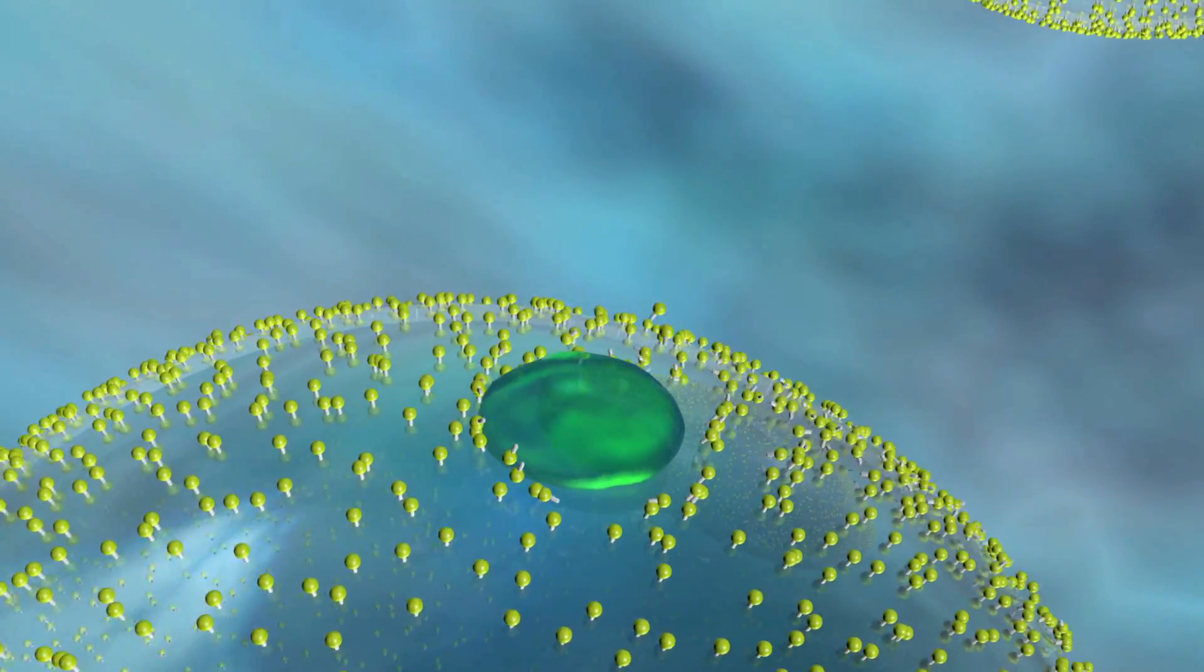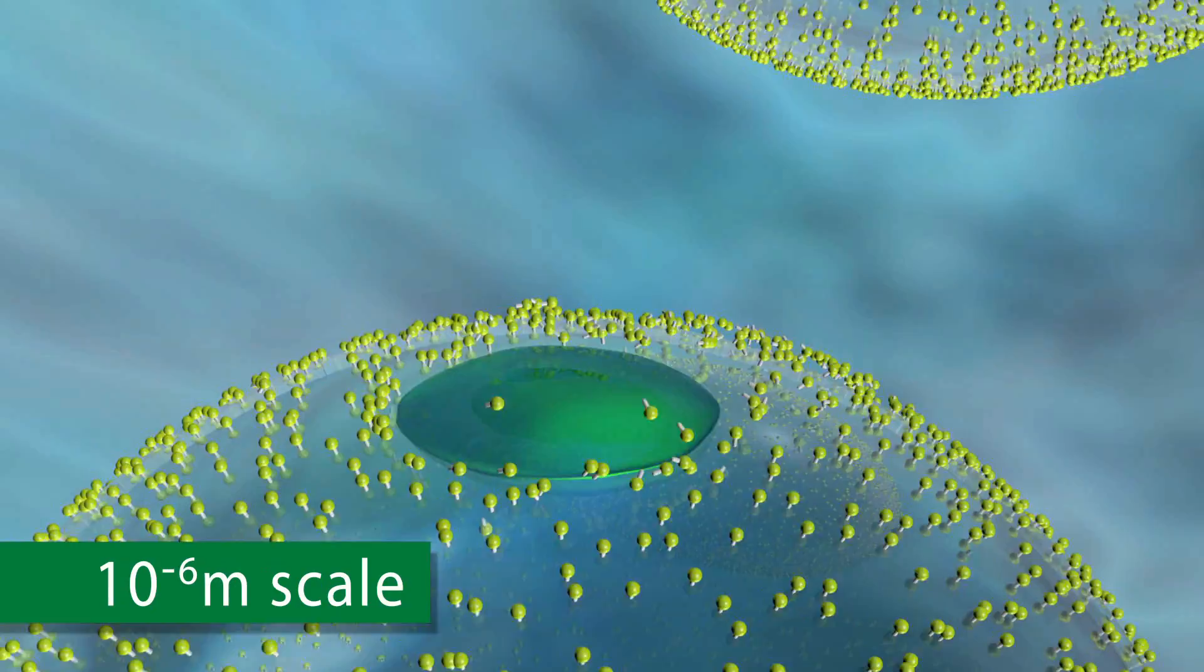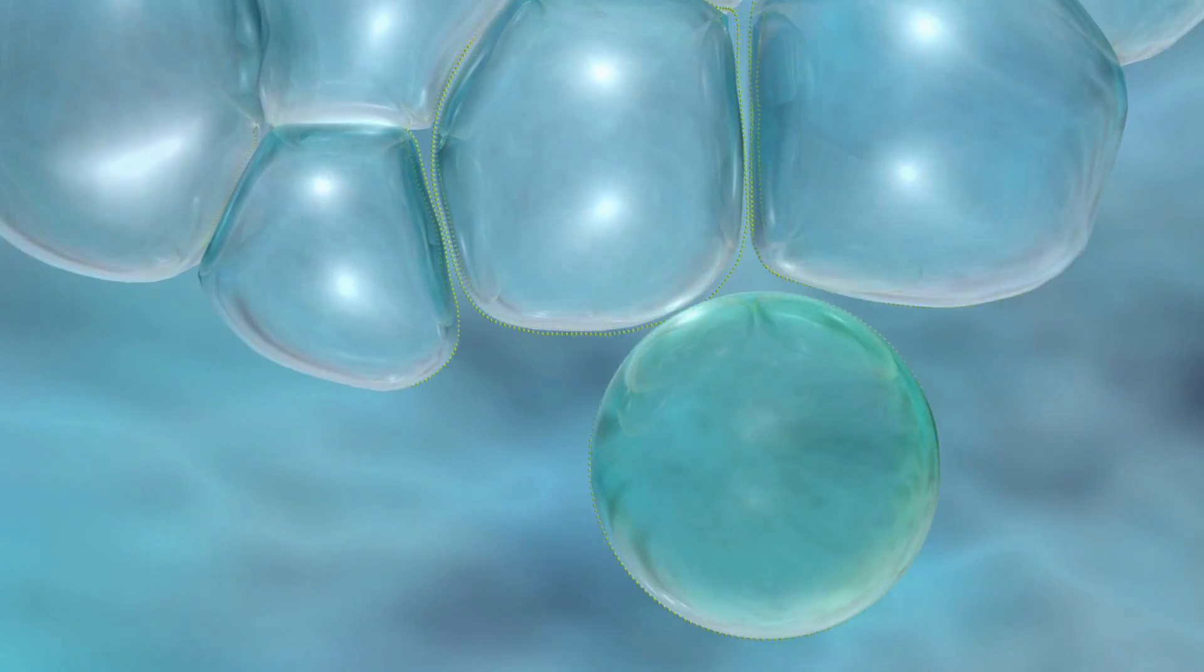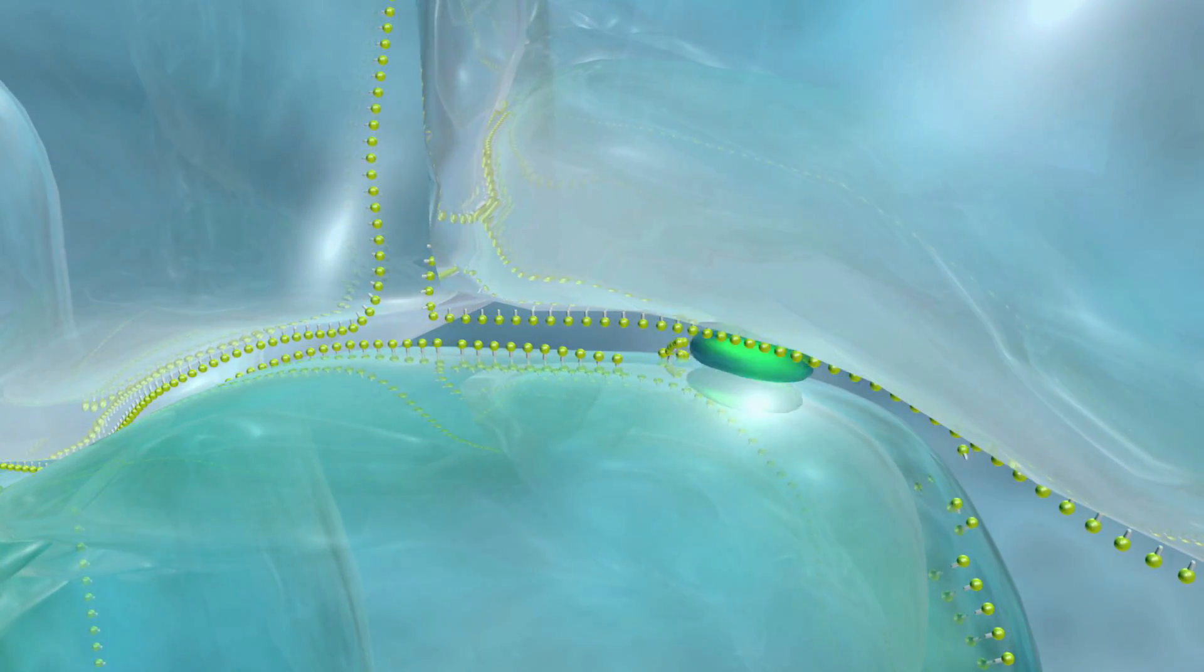Secondly, the defoamer droplet spreads and pushes aside the stabilizing surfactants. Without the stabilizing surfactants, the foam lamella is locally becoming much less elastic. A weak spot is being formed. This kind of destabilization facilitates rupture of the foam lamella.